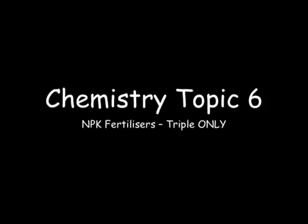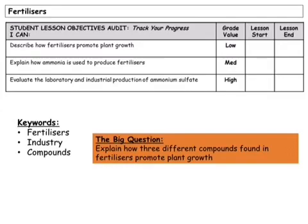This is a GCSE chemistry tutorial focused on topic 6, looking at NPK fertilisers. This is a triple only topic. In this tutorial we will look at how fertilisers promote plant growth, how ammonia is used to produce fertilisers, and we'll look at both the methods used in the laboratory and in industry to produce ammonium sulfate.